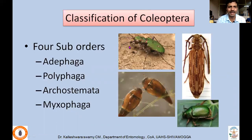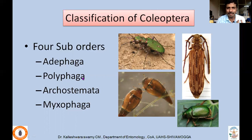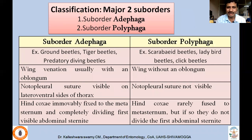Coming to classification of Coleoptera — four suborders have been identified: Adephaga, Polyphaga, Archostemata, and Myxophaga. Out of these four, Adephaga and Polyphaga are major. In the case of Archostemata and Myxophaga, very few species have been described and they are not economically important. So I'll be targeting only the two suborders, Adephaga and Polyphaga.